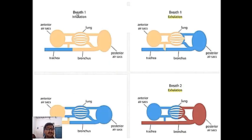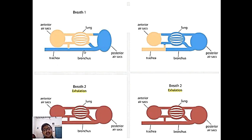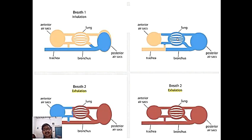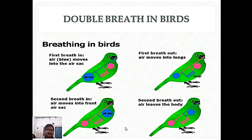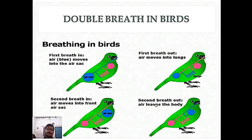Oxygen provides continuous energy and hence birds are able to fly easily for longer periods of time. In this animated figure: Breath one — air comes through the trachea and goes into the posterior air sacs. First exhalation — the first inhaled air goes from posterior air sacs to the lungs by contraction of air sacs. Second inhalation — the first breath moves into the anterior air sacs. Second exhalation — pushes the first air from anterior air sacs to move out. So double breath cycles complete the process.